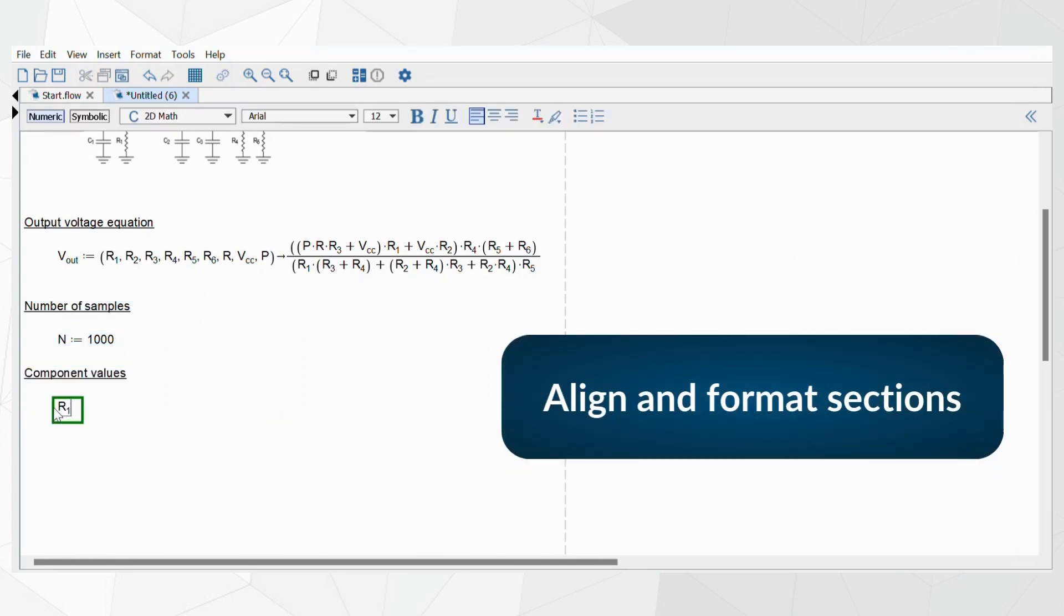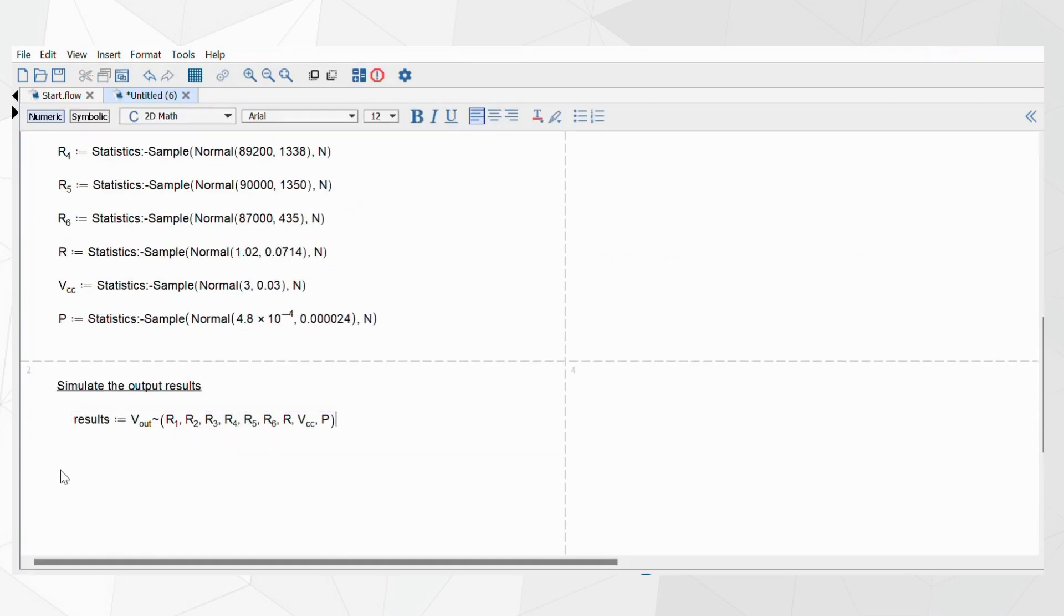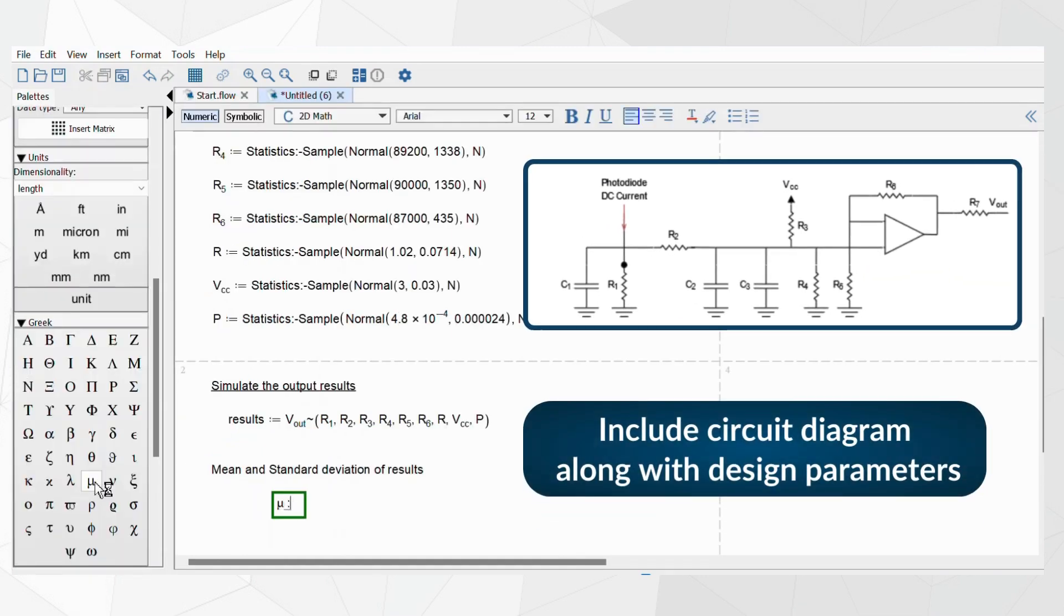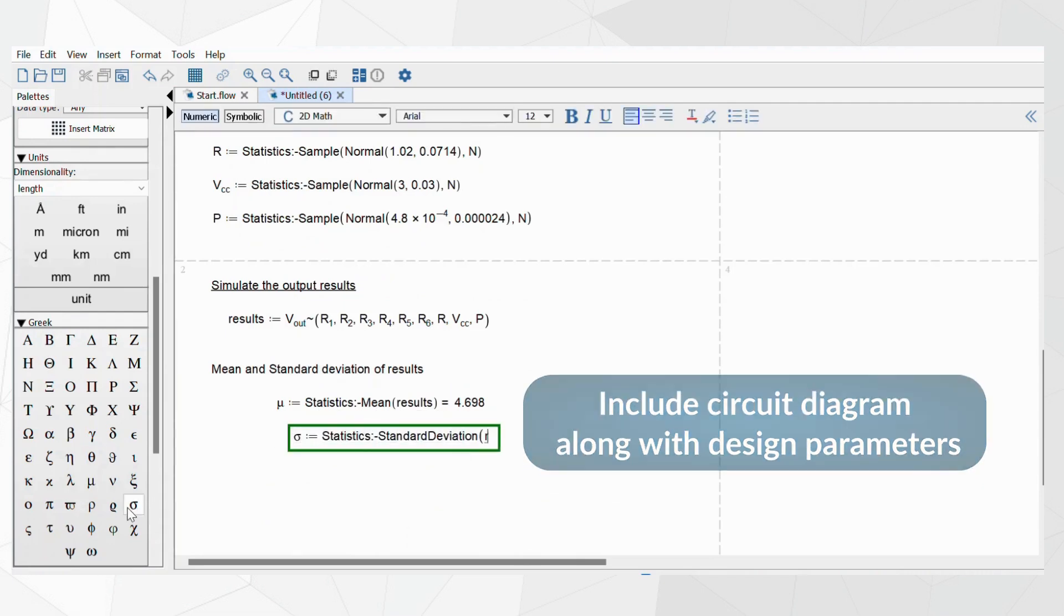It's easy to group these containers, move and align them, and change fonts and spacing. For instance, in a Monte Carlo simulation like the one here, engineers can incorporate the circuit's schematic and the simulation's pertinent parameters ready to be shared with your team.